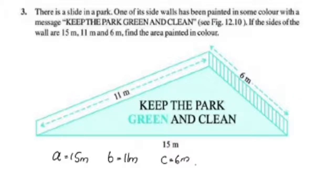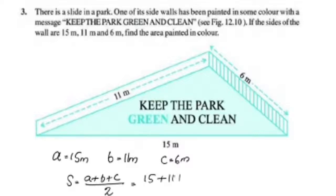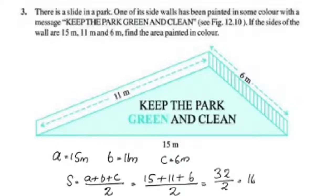Let's apply Heron's formula. The semi-perimeter S is equal to (A + B + C) divided by 2, that is (15 + 11 + 6) divided by 2, which equals 32 divided by 2, is equal to 16m.